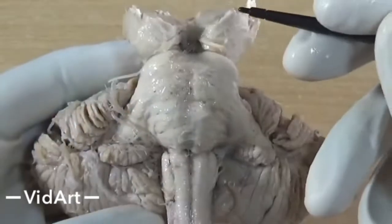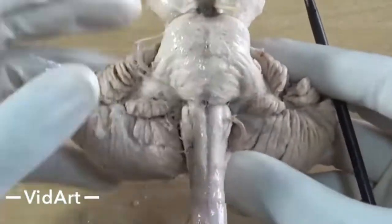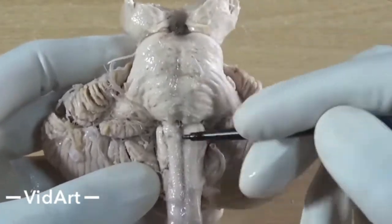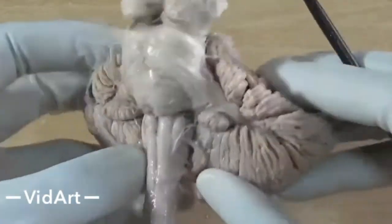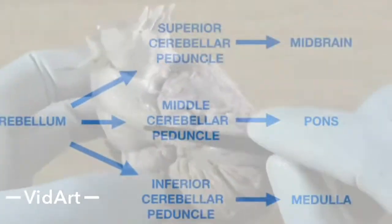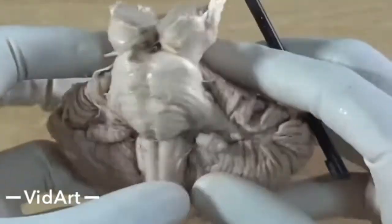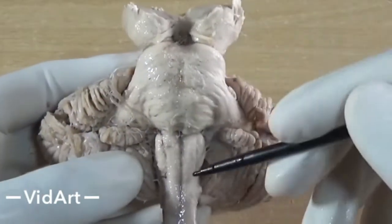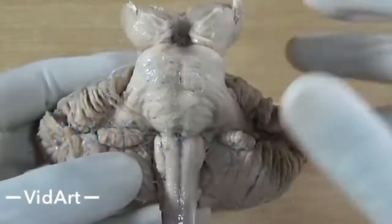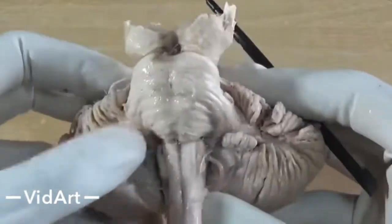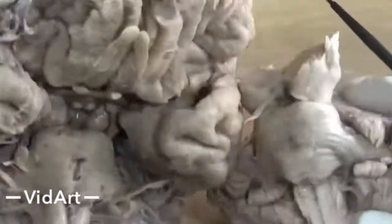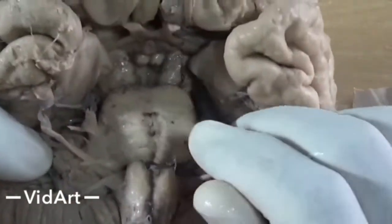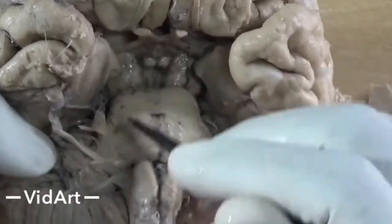Here is a brain stem that has been removed from the cerebrum. You can see midbrain, pons, and medulla, and these three are connected to the cerebellum via superior, middle, and inferior cerebellar peduncles. The midbrain belongs to the mesencephalon, whereas pons and medulla belong to the rhombencephalon. Let's compare it with the intact brain to see how it looks.